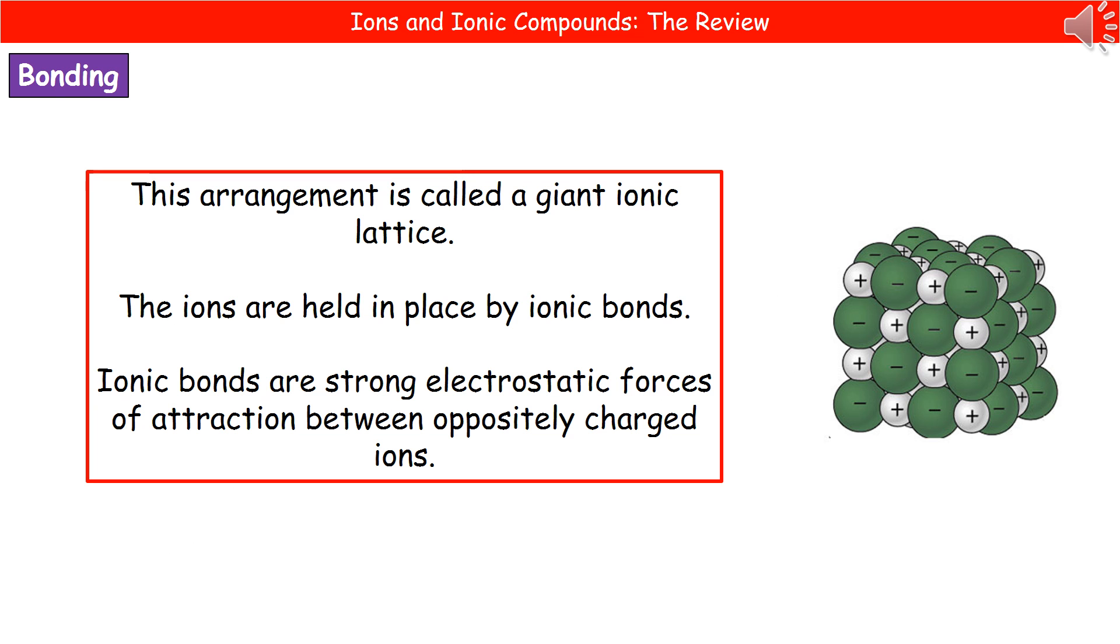So if we think about a typical ionic compound that everyone has encountered, sodium chloride, which is good old table salt. Then what we actually have are sodium ions, which are positively charged, and chloride ions, which are negatively charged. So on the right there, I've given you the space filling model of sodium chloride. So you can see that every positive ion there has got negative ions surrounding it, and vice versa.